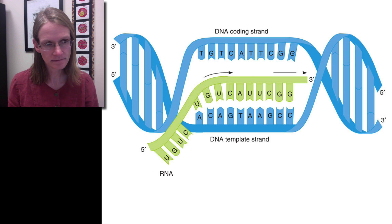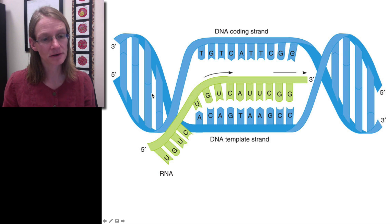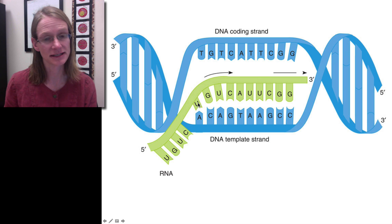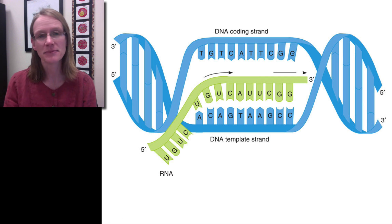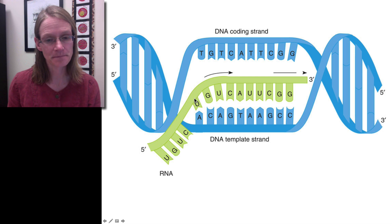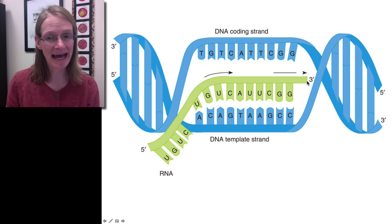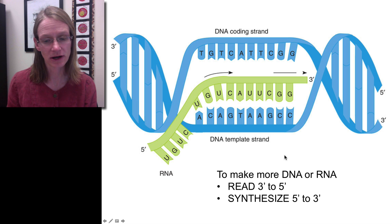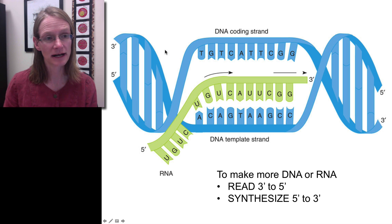DNA is a double-stranded molecule — here's one strand and here's the other. If we want to make more DNA or make RNA from the original coding, we have to unzip it. Once unzipped, we can match things together using Chargaff's rule again: every C matches with every G, but in this case every A matches with U's because we don't have T's in RNA. The key thing to remember is directionality — you can only add nucleotides onto the three prime end. We always synthesize from the five prime to three prime direction, but we read the template strand from the three prime to five prime direction.